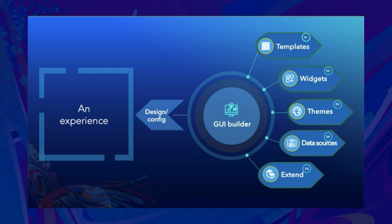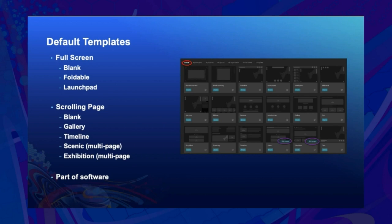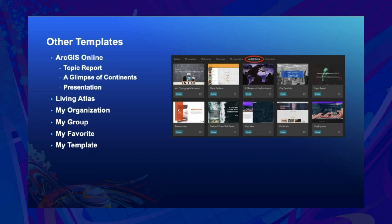Configuring an experience starts with a template. There are two types: full screen for web apps and scrolling page for web pages. There are many default templates provided by the software, and you may preview and choose one to start with. You can also start with templates available in ArcGIS Online, Living Atlas, My Organization, etc.